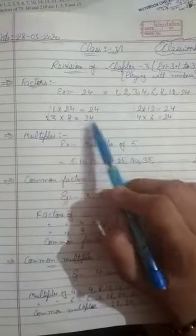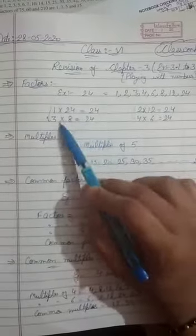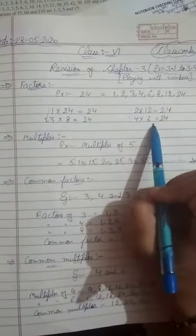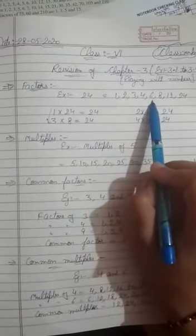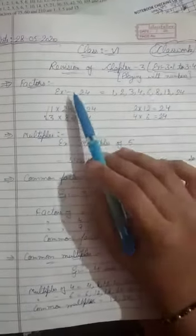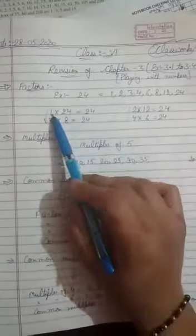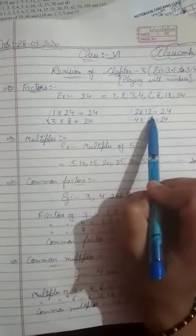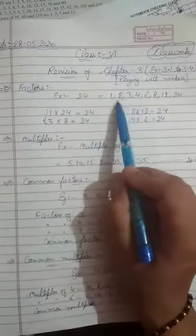2 multiplied by 12, 2 twelves are 24. That means 2 and 12 are also factors of 24. 3 multiplied by 8 is equal to 24. That means 3 and 8 are the factors of 24. 4 into 6 is equal to 24. That means 4 and 6 both are factors of 24. So you can write here 1, 2, 3, 4, 6, 8, 12, 24 are the factors of 24.